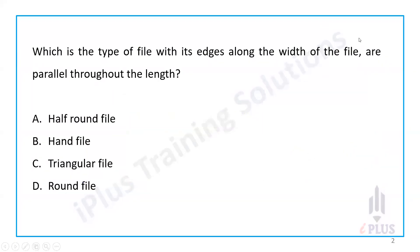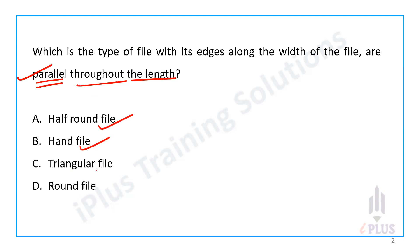One question is: which is the type of file with its edges along with the width of the file parallel throughout the length? The options are: option A, half round file; option B, hand file; option C, triangular file; option D, round file.